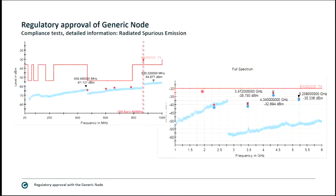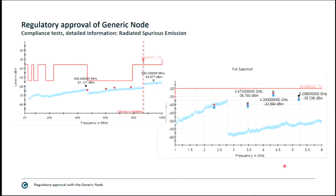The next harmonic is at 4.34 GHz with amplitude much closer to the limit, and another at 5.2 GHz. Testing was done up to 6 GHz. For FCC radio testing, it would run to the 10th harmonic at around 9 GHz. All results comply.